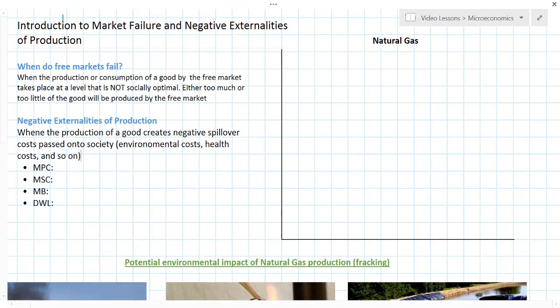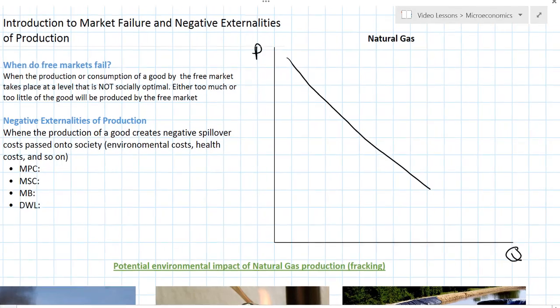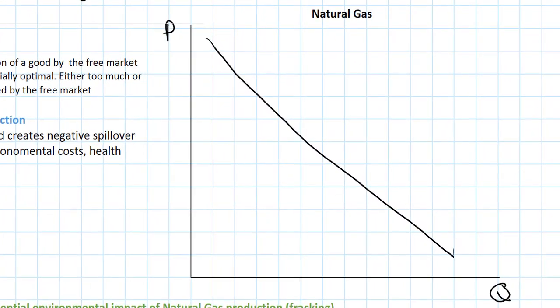How do we illustrate the negative externalities of gas production using a supply and demand or marginal benefit/marginal cost diagram? We've got the market for natural gas with quantity on the horizontal axis and price on the vertical axis. We know from earlier units that there's an inverse relationship between a good's price and the quantity demanded, and the marginal benefit is represented by the demand curve — so the marginal benefit of gas consumption is downward sloping. At lower prices the world buys more gas; at higher prices, less gas.